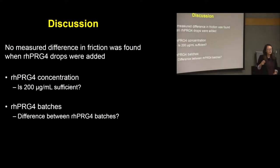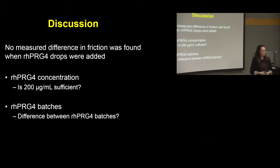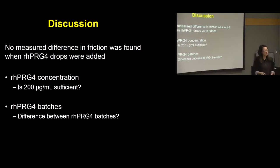We showed no measured difference in friction when RH-PRG4 drops were added, so we had to think about what could have gone wrong. Was it the concentration? Previous tests by Michael Sampson used 300 micrograms per milliliter, while we used 200. However, the clinical trial used only 150 micrograms per milliliter and still showed improvement in dry eye symptoms. So we looked at something else: the different RH-PRG4 batches.